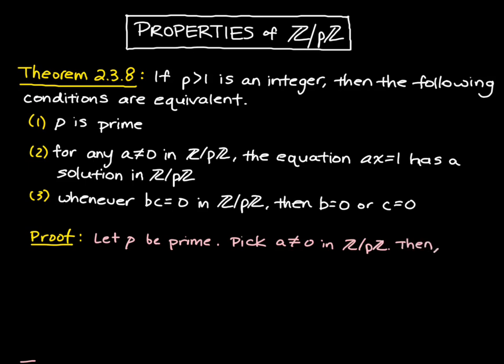Then since a is non-zero, a is not congruent to 0 mod p. So that means the congruence class of a, in particular, a is not an element of the congruence class of p. So p does not divide a.